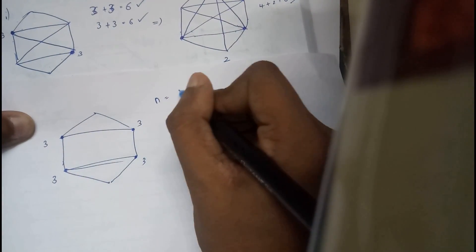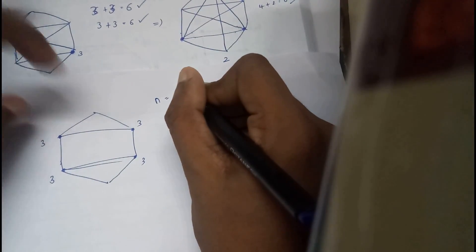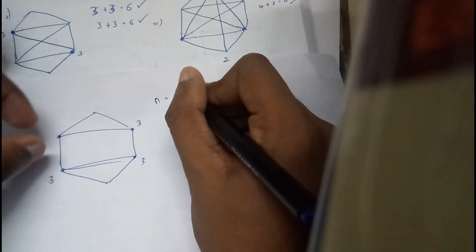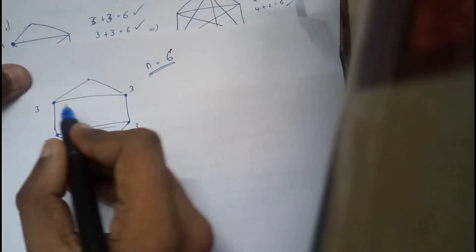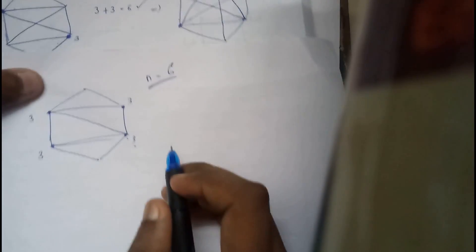And number of vertices is equals to one, two, three, four, five, six. So here by adding these both, three plus three, I'll be getting six. So this is a path.